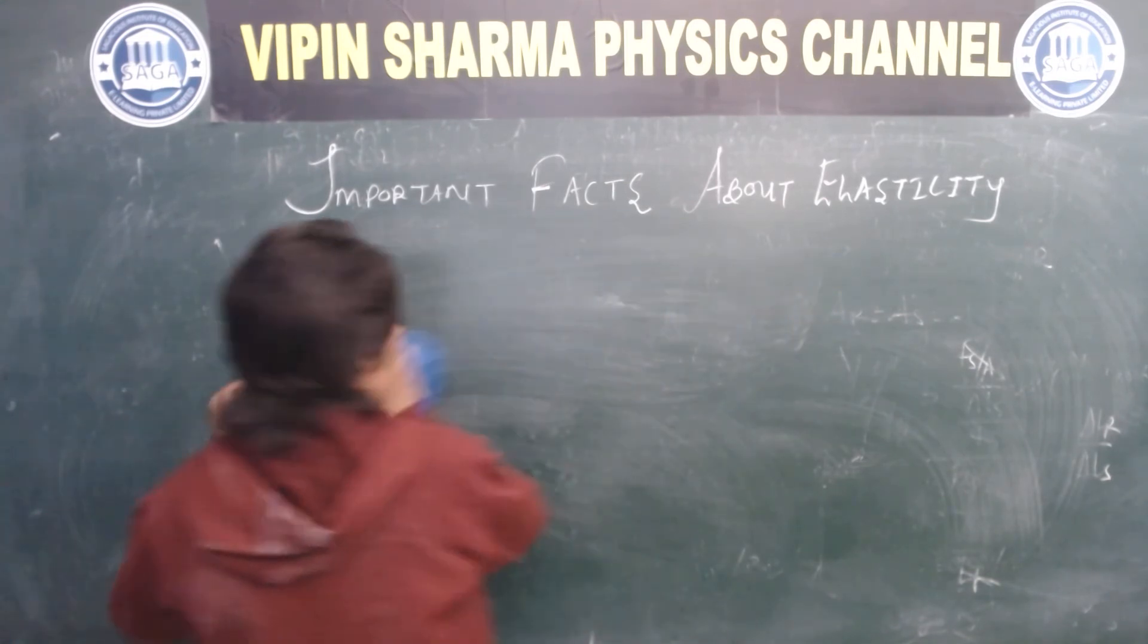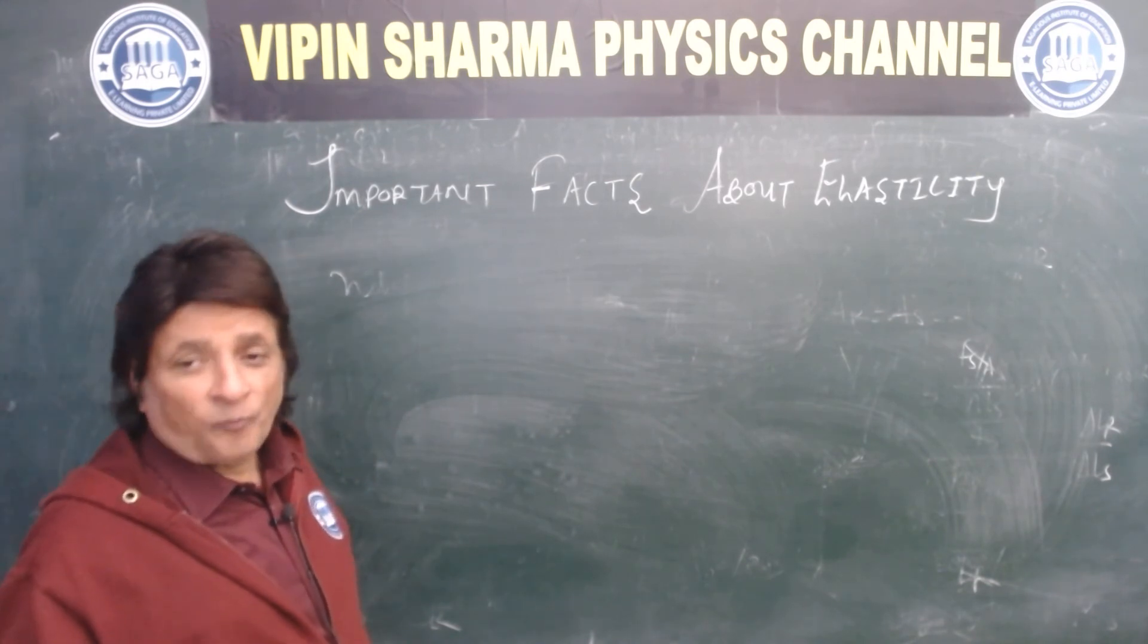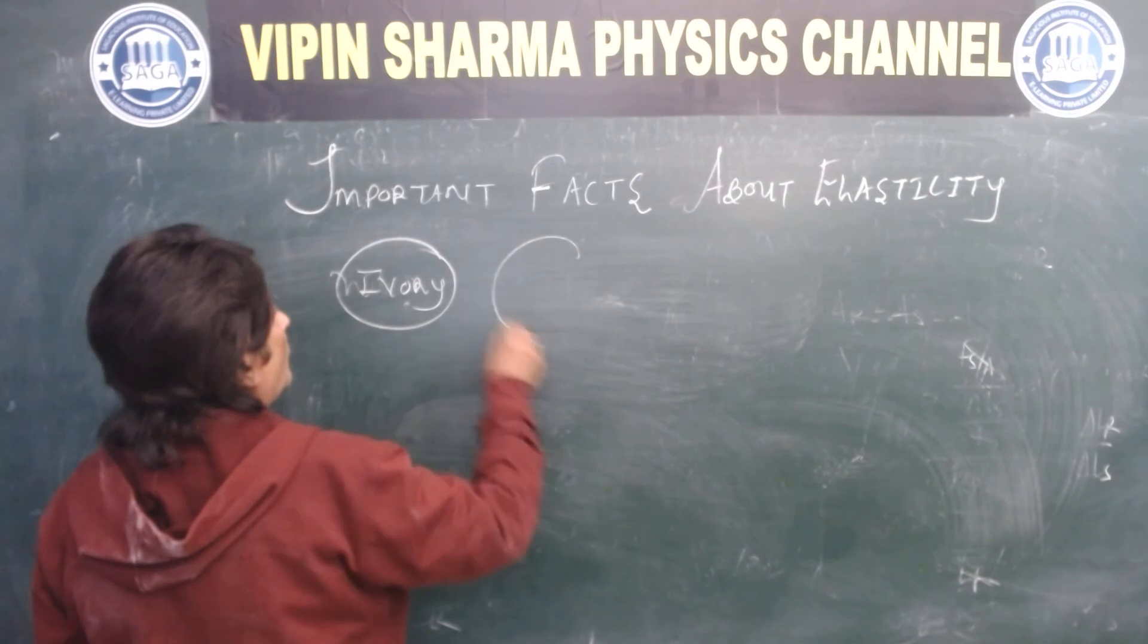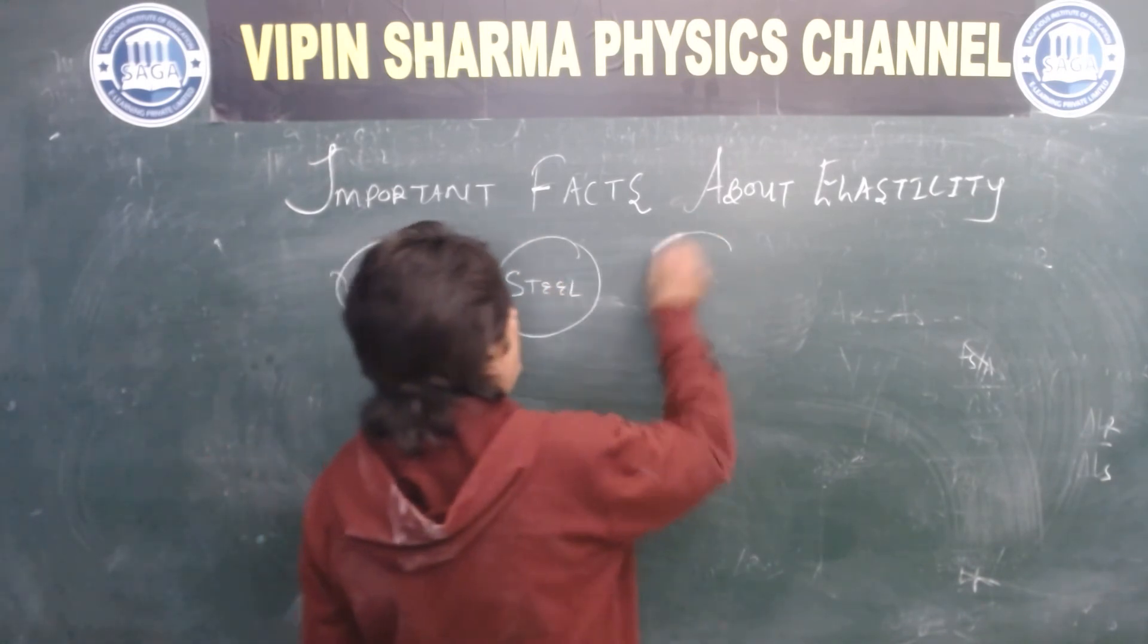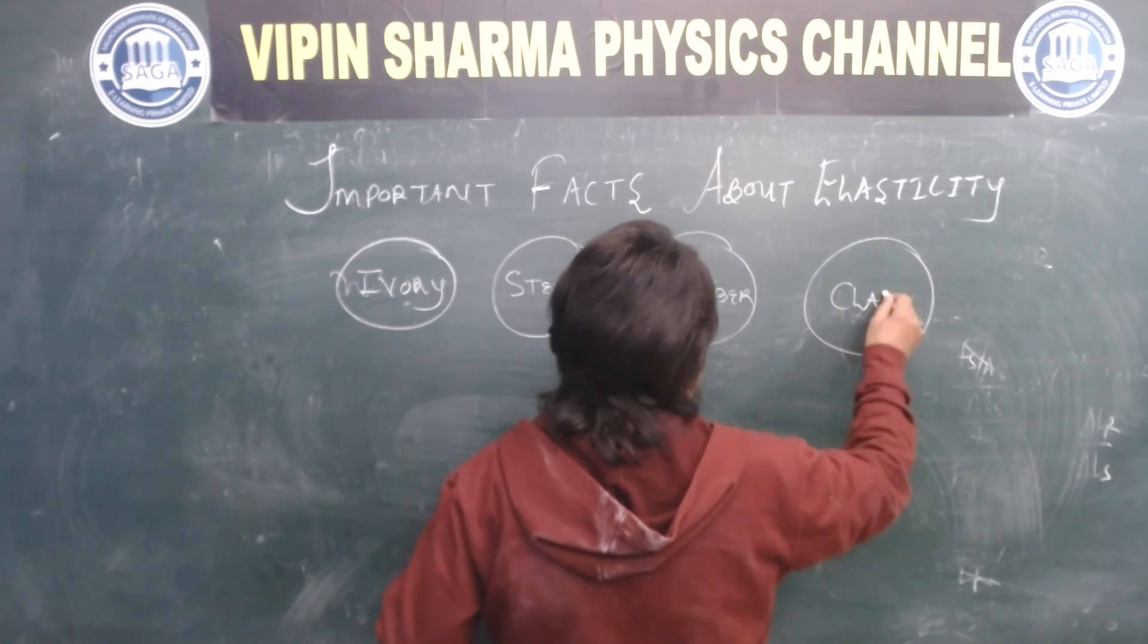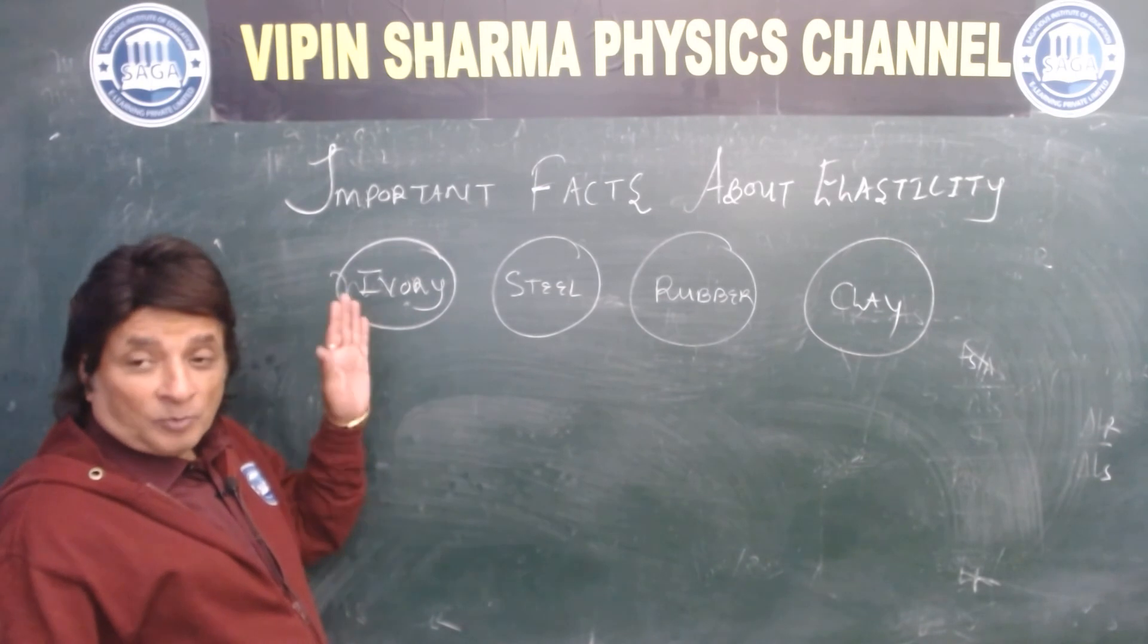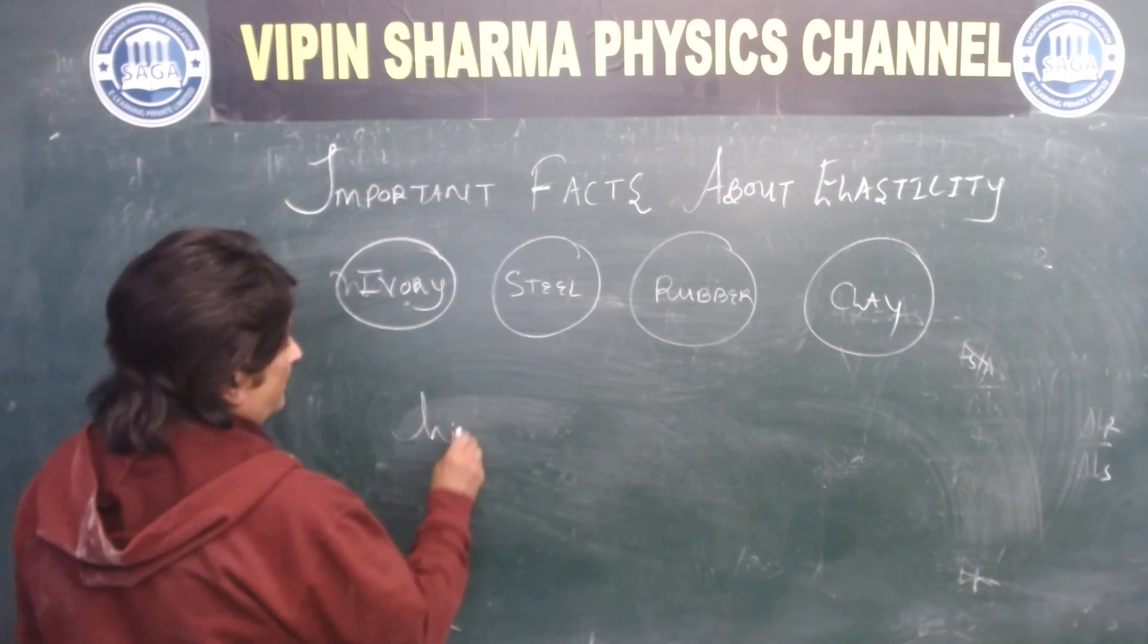First is ivory, hathi dant. Second is steel. Third ball is rubber, and fourth ball is clay, mitti ki ball. If I drop these four balls from the same height, which one will bounce back the highest?